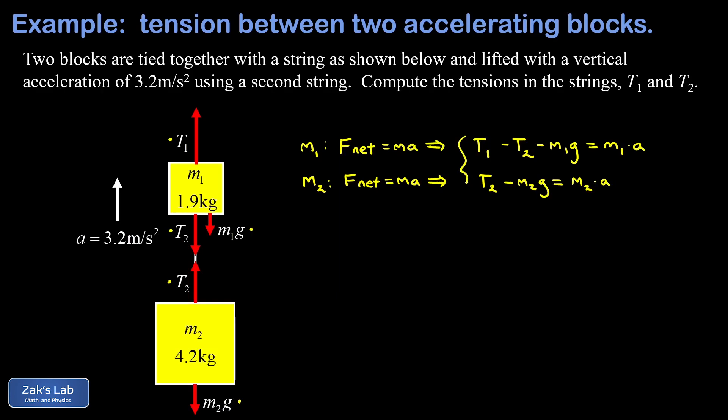We've built here a system of two equations and two unknowns, where the unknowns are the two tensions. This system is nicely set up to use elimination. If I add the two equations, the T2s will cancel out and we should be able to solve for T1. Doing this addition on the left side, I end up with T1, the T2s are gone, and I have minus m1 g minus m2 g. On the right side I have m1 a plus m2 a.